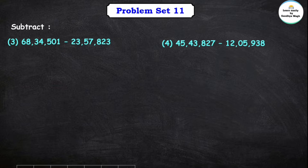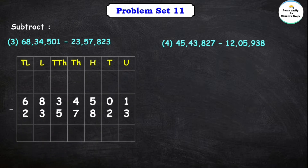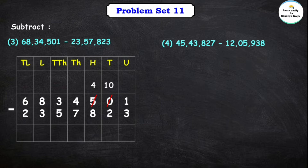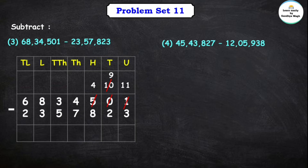Next question, question number 3: 68,34,501 minus 23,57,823. Let us subtract the unit place first. Here we cannot subtract a bigger number from a smaller number, so we borrow. The tens place is borrowed from — after borrowing we have 11 units. 11 minus 3 is equal to 8.